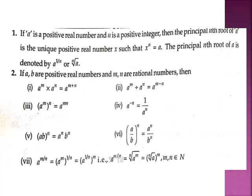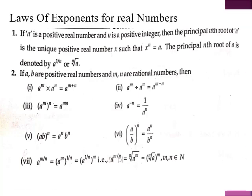If a is a positive real number and n is a positive integer, then the principal nth root of a is the unique positive real number x such that x raised to the power n equals a. The principal nth root of a is denoted by a raised to the power 1 upon n, or nth root of a. You have seen square root and cube root in Standard 8, so here 2 and 3 are replaced by n, and it can be written in power form as a raised to the power 1 upon n.